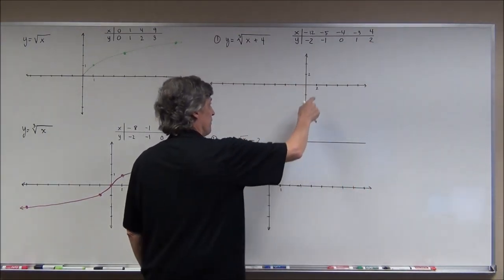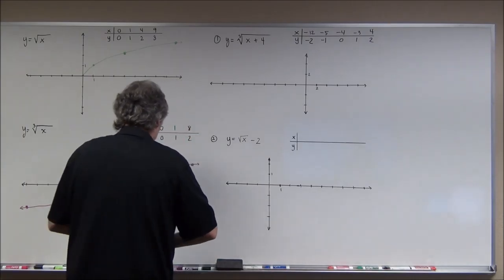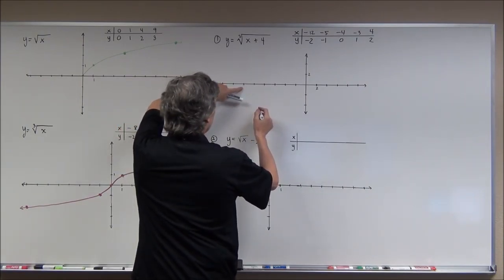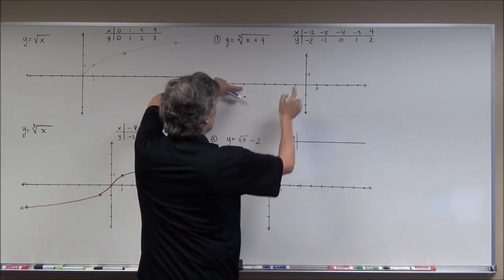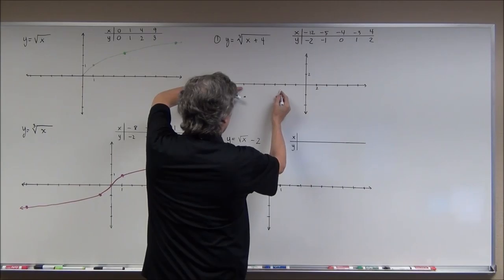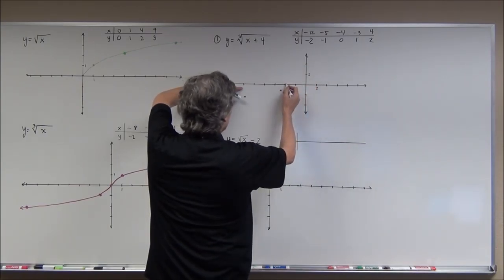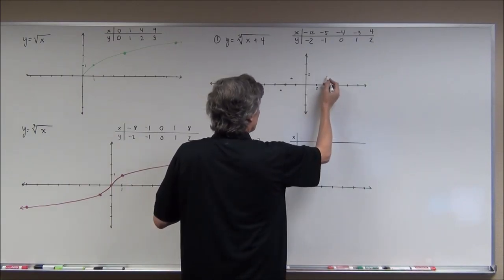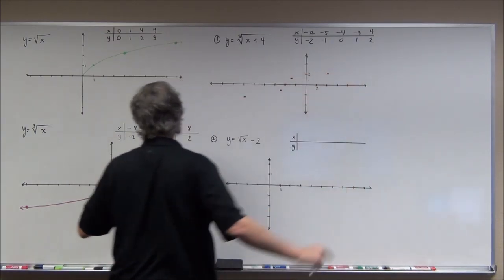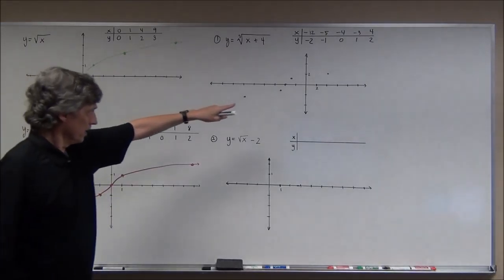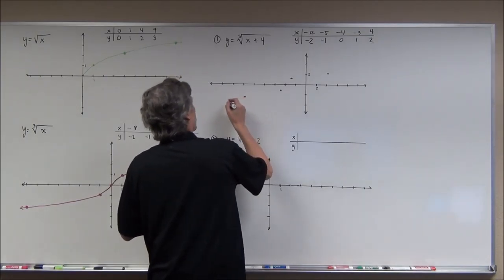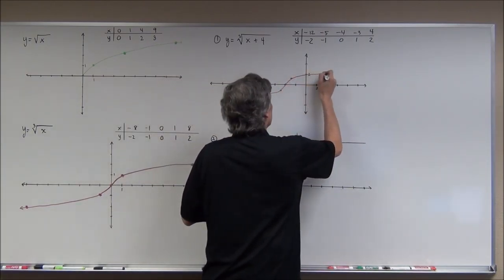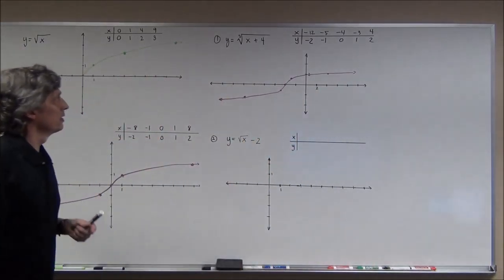I made the scale a little different — each tick mark is worth 2. Graphing those points: (−12, −2), (−5, −1), (−4, 0), (−3, 1), and (4, 2). Do you see the shape? Do you see how it models the parent graph? It's shifted four units to the left. And that's how you graph it.